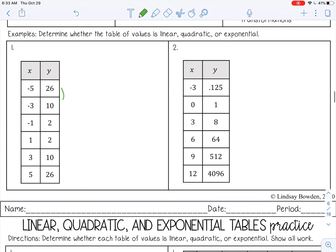Okay, so from 26 to 10, that's minus 16. From 10 to 2, that's minus 8. From 2 to 2, that's nothing. From 2 to 10, that's plus 8. And then from 10 to 26, that's plus 16. Okay, that's not linear.